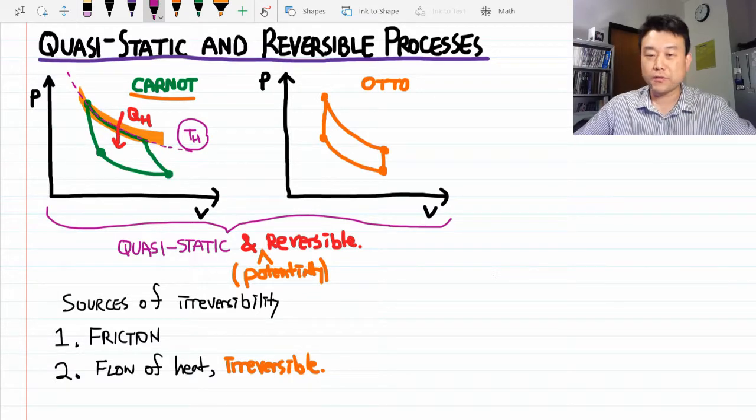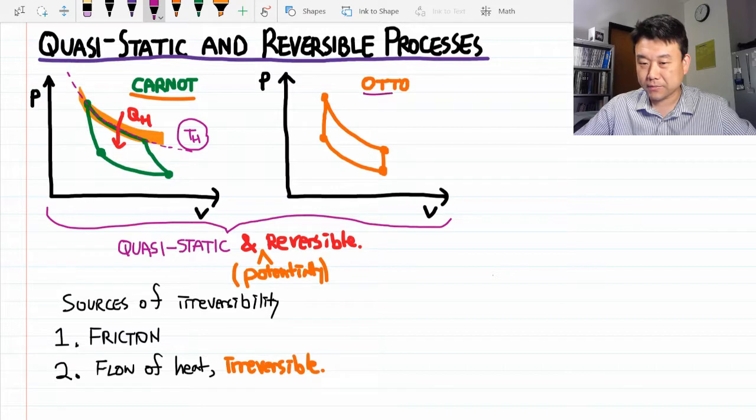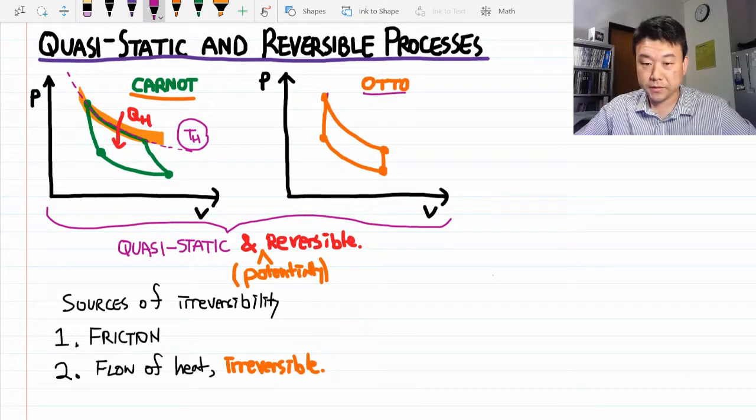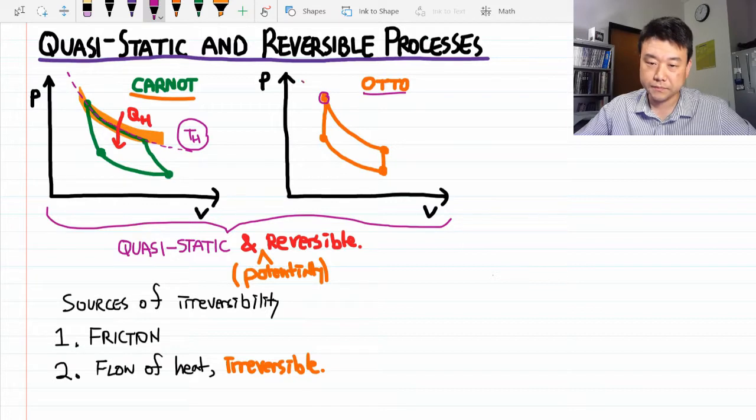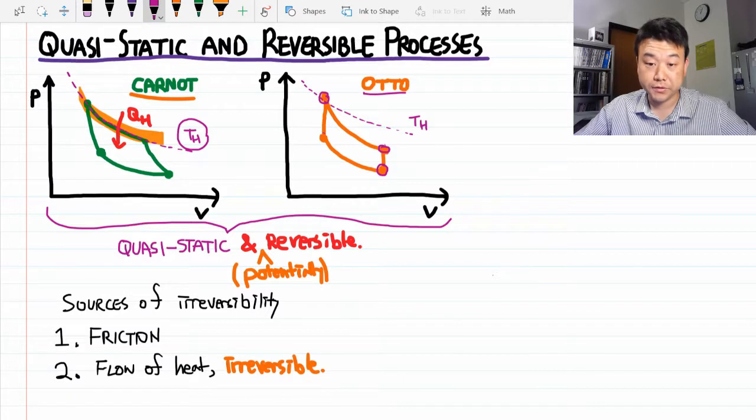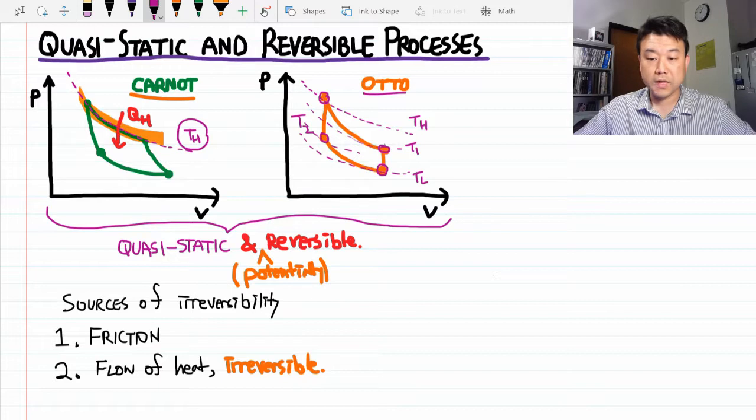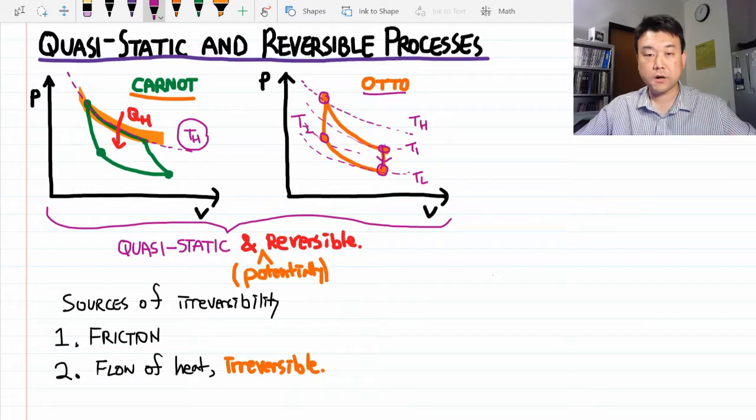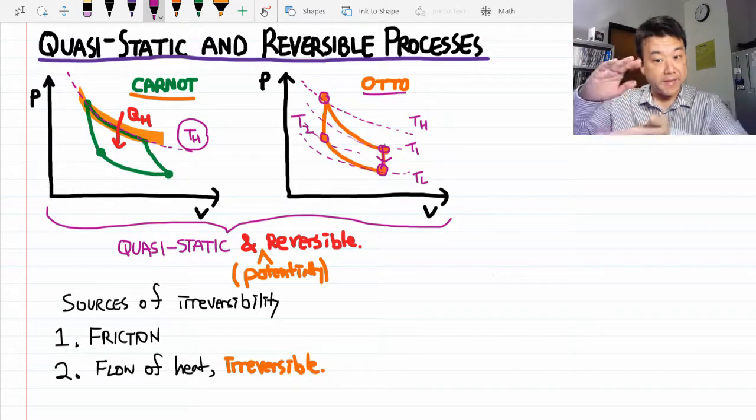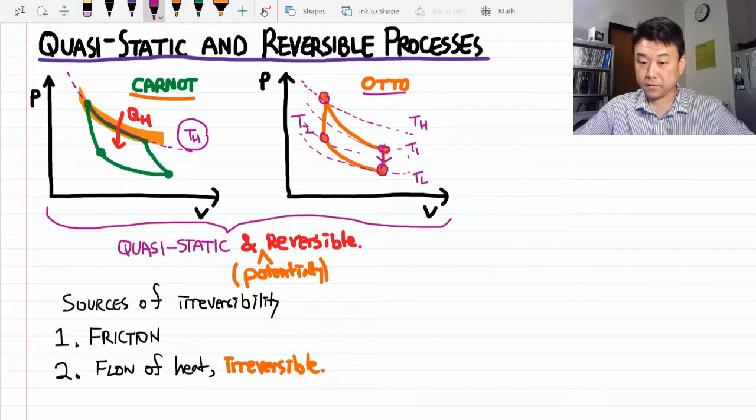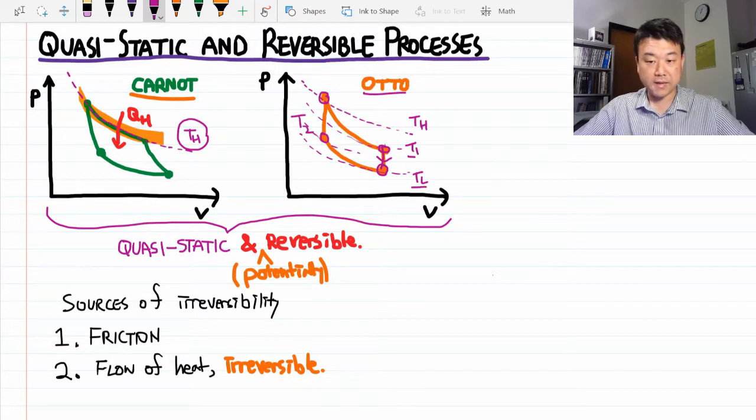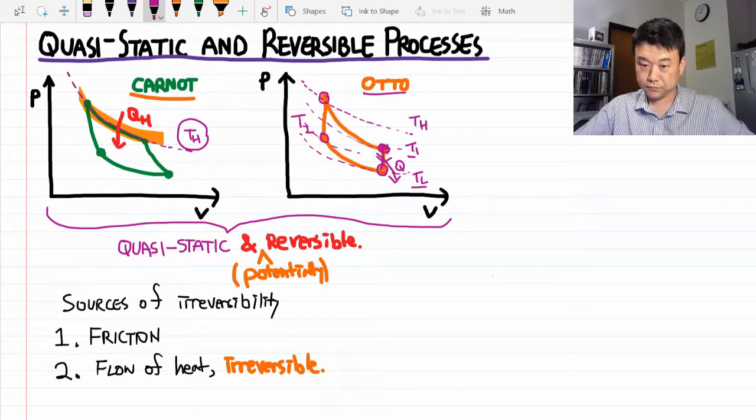It's at this point at which an observant student might say, aha, I've got you. So the Otto cycle is irreversible because this point is at the high temperature TH. And all these four points are at different temperatures. So, for example, when the system undergoes isochoric cooling in this portion of the cycle, the heat transfer must be occurring through a finite temperature difference from T1 to TL. The gas at high temperature T1 is releasing heat into TL. QED,